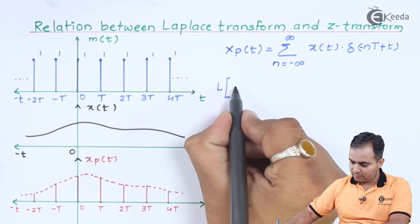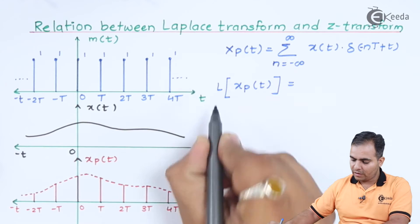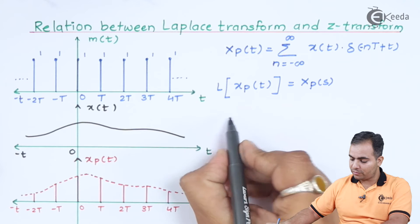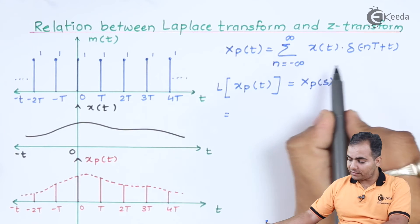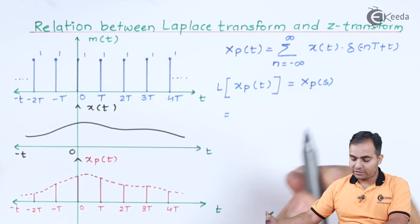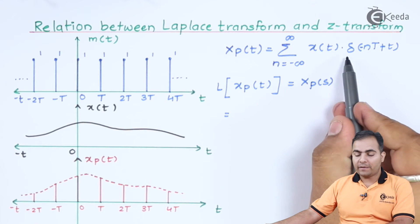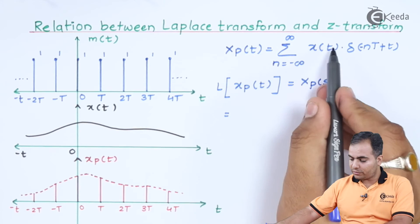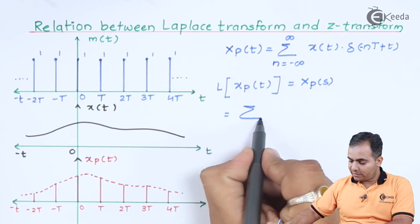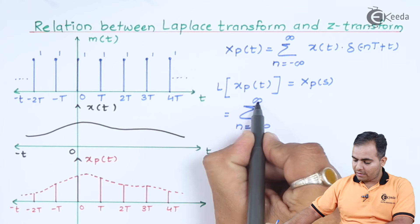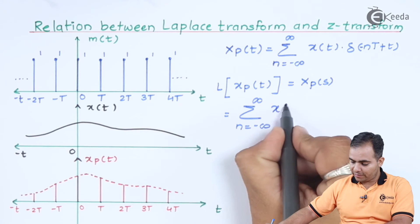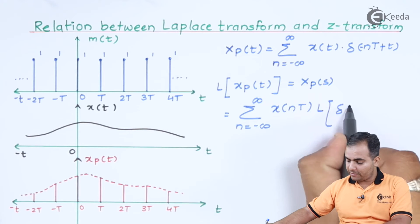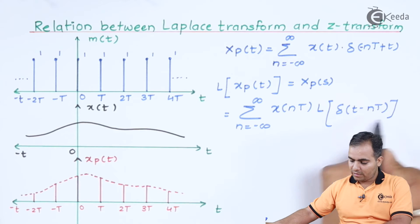Now I will apply Laplace transform on both sides. The Laplace transform of xp(t) is represented by Xp(s), because the function is transformed into the Laplace domain. We directly apply Laplace transform on the delayed function delta(t minus nT). Since x(t) is now available in discrete format, I replace t by nT, writing the summation outside, and x(t) is represented by x(nT).